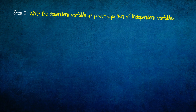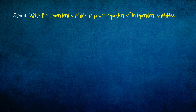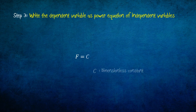Step 3 consists of writing the dependent variable as a power equation of independent variables. Here we write F equals a dimensionless constant C times d to the power a, times v to the power b, times rho to the power c, times mu to the power d.